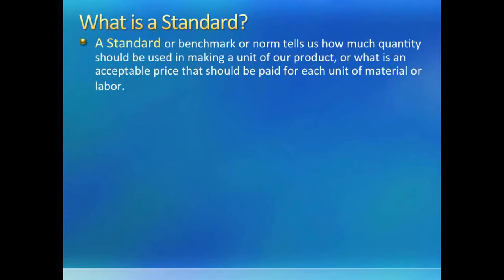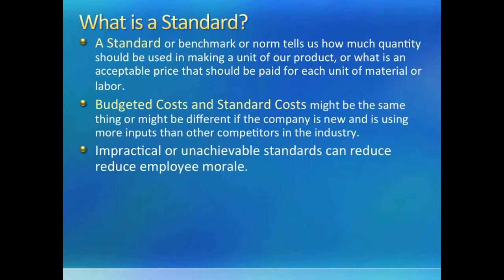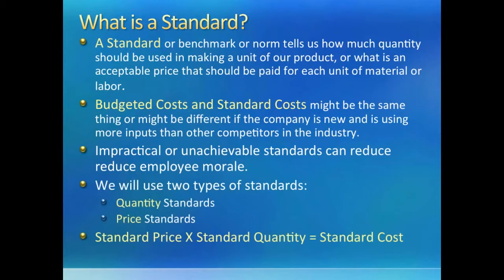You have seen budgeted or estimated numbers before. Where do these numbers come from? They can either come from previous year's performance or they can come from some industry benchmarks or norms or standards. For example, there is such a thing as the most efficient way to make a pizza, meaning not using too much but not too little of dough or cheese, or the right amount of time. So most of the budgeted numbers are a combination of what the company did in previous years and what everyone else in similar business considers achievable.